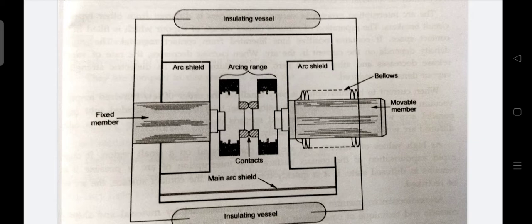For example, when contacts of a breaker are opened in vacuum, the interruption occurs at first current zero with dielectric strength between the contacts building up at a rate thousands of times higher than obtained with other circuit breakers. The principle of vacuum circuit breakers is the production of arc in a vacuum circuit breaker and its extinction can be explained as when the contacts of the circuit breaker are opened in vacuum, an arc is produced between the contacts by the ionization of metal vapors of contacts.